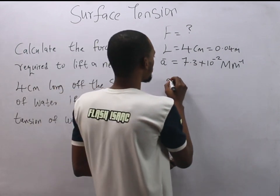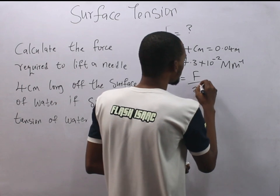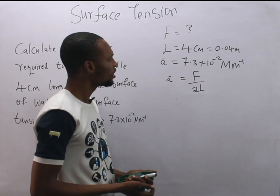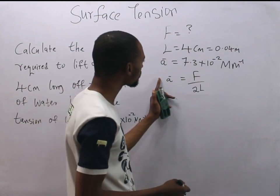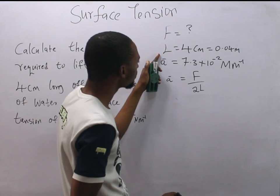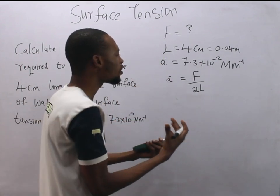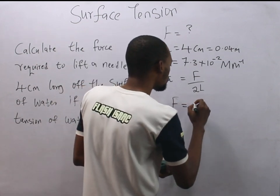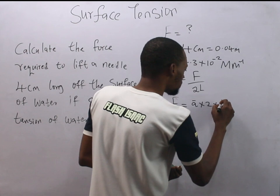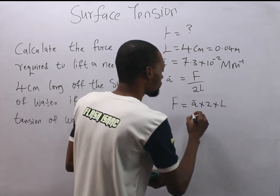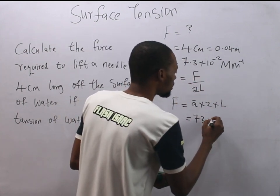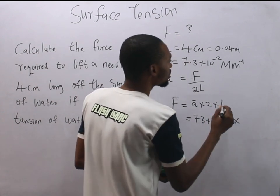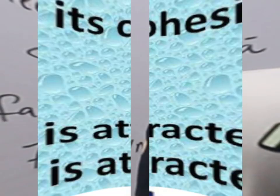Surface tension equals force over 2L because it acts on either side of the needle. We have surface tension and length, and we are looking for force. Making force the subject of the formula: force equals surface tension times 2 times L, which equals 7.3 × 10⁻² times 2 times 0.04 m.